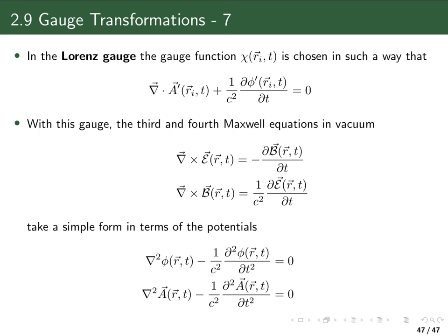Finally, the last gauge I want to mention is the so-called Lorenz gauge, where the gauge function is chosen such that the divergence of the gauge-transformed vector potential plus the time derivative of the gauge-transformed scalar potential equals zero. With this gauge, the third and fourth Maxwell equations in vacuum take a simple form in terms of the potentials: the Laplacian of the scalar potential minus the second time derivative of the scalar potential equals zero, and correspondingly for the vector potential. In the following chapters we will not discuss the Lorenz gauge further, but in chapter 7 on electronic excitations, transition moments, and oscillator strengths, we will see that expressions for the oscillator strength can be obtained in both the length gauge and the velocity gauge.